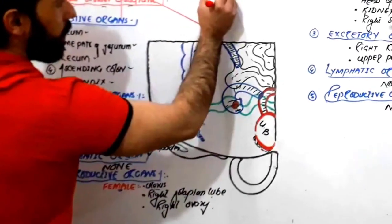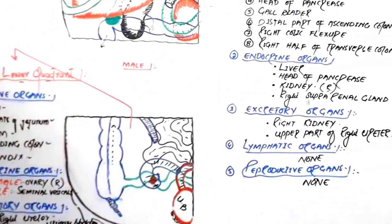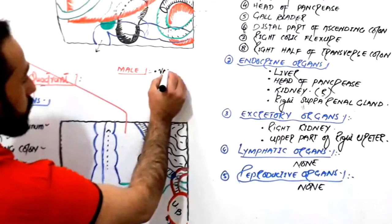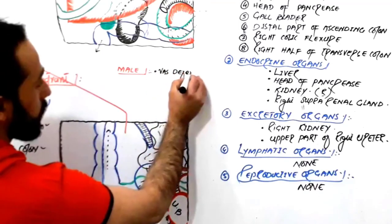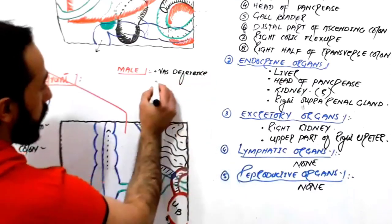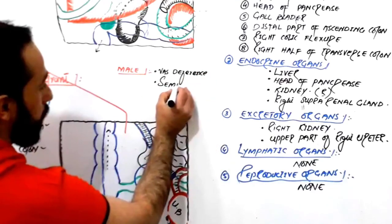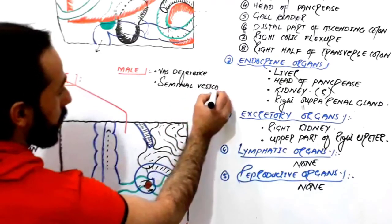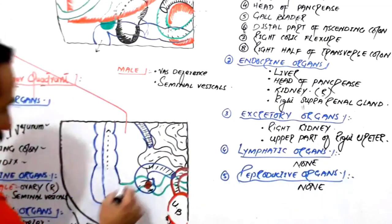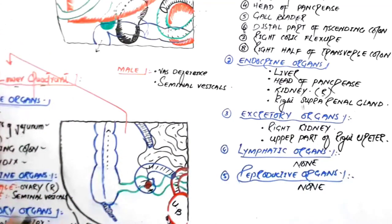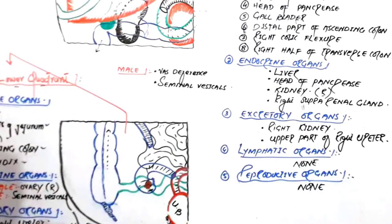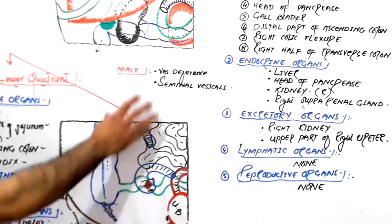In the case of males, there are also certain reproductive organs in the right lower quadrant. We have the seminal vesicles, which are present in the right lower quadrant of a male's abdomen. These are the reproductive organs found in the right lower quadrant for both males and females.